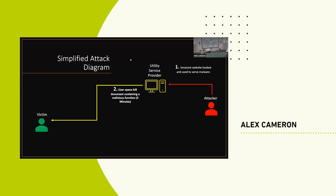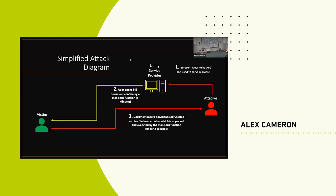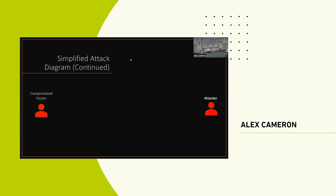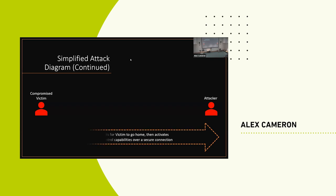Within that document, we believe there was text asking them to enable macros to see the bill, under the guise of a security protection mechanism — 'enable macros for us to show you your bills because it's a new security mechanism.' That's social engineering: generating credibility, lulling you into a false sense of security. After they did that, the downloaded macro executed, downloaded the additional file, and at that point the victim is just another node in the attacker's operation.